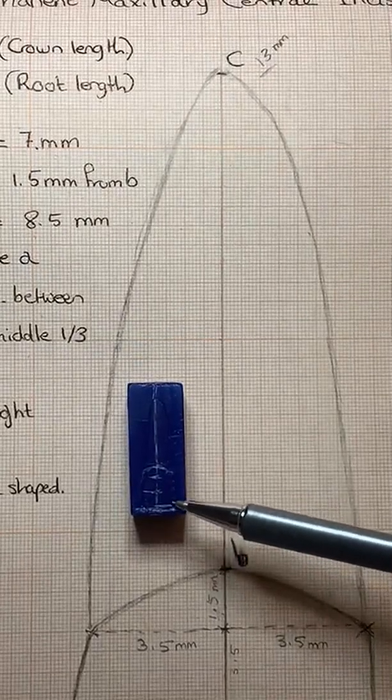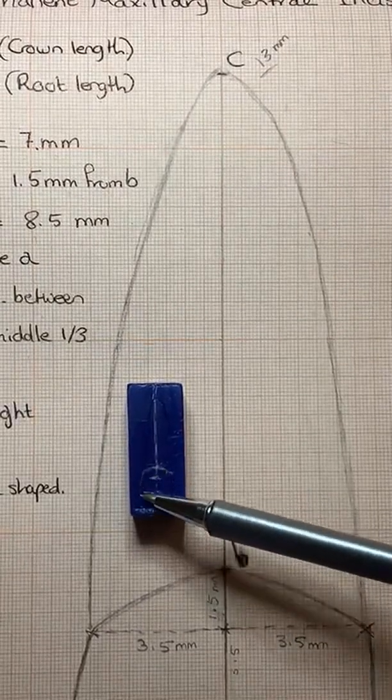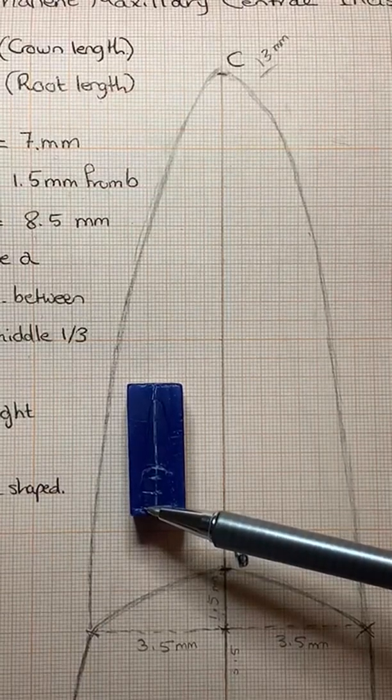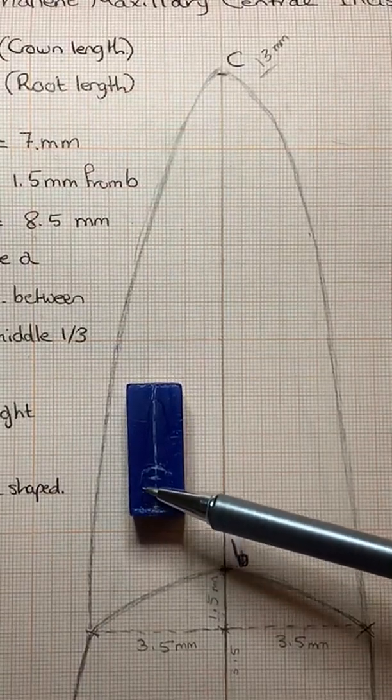As I say, it's a straight mesial outline, rounded outline distally with the crest of curvature at the junction.